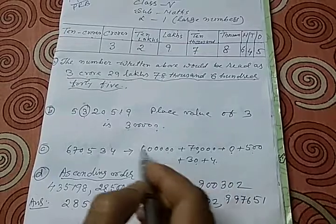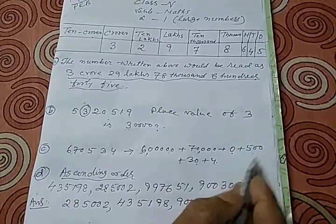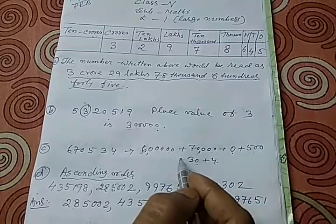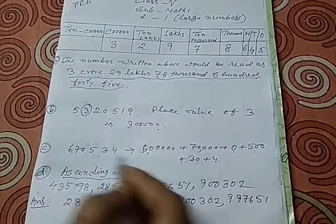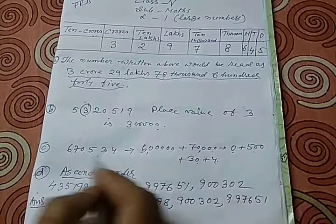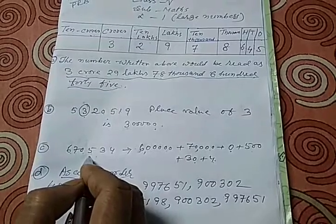Similarly, if this number is given, this expanded form is given to you, you can convert it into short form like this. In that case, you just add these numbers and you will get this number, that is short form number.